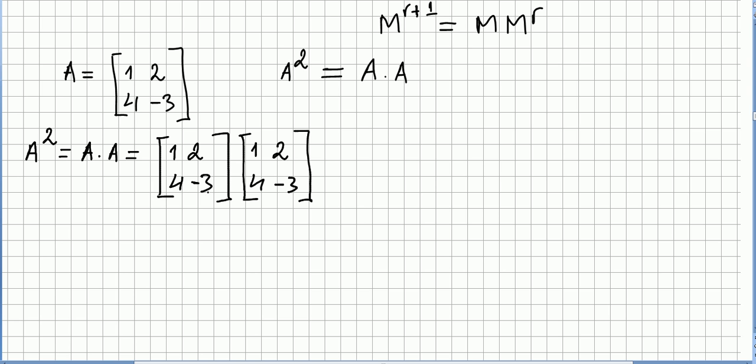So A squared will be A times A, and that will be 1, 2, 4, minus 3, times 1, 2, 4, minus 3. Right, and now we perform a matrix multiplication. And we get 9 minus 4, minus 8, 17.